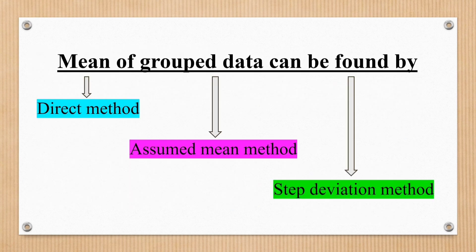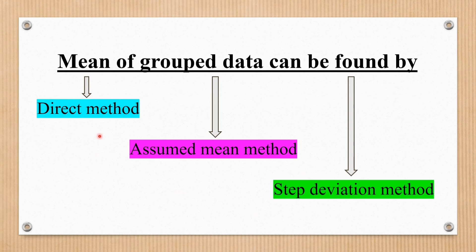Next, we are going to find the mean of grouped data using three methods: the direct method, the assumed mean method, and the step deviation method. The assumed mean method and step deviation method are simplified versions of the direct method.